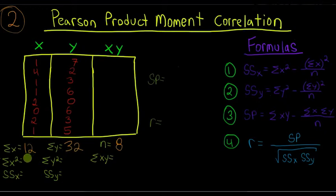And then I'm going to go down the line here. We have the sum of x squared. So if I square 1 and 4 and 1, 1, 2 and 0 and 2 and 1, you can do that in your head or on a calculator. That's going to be 28.